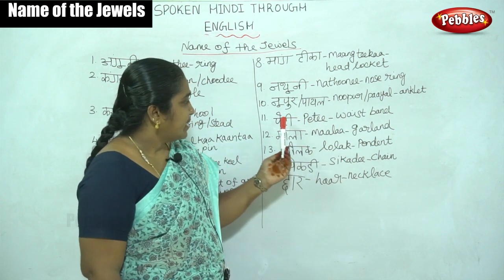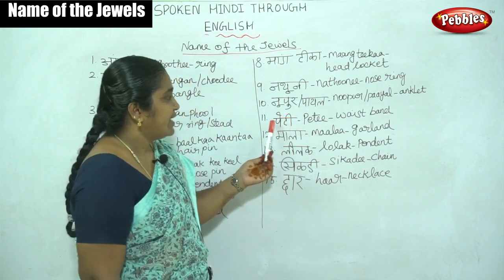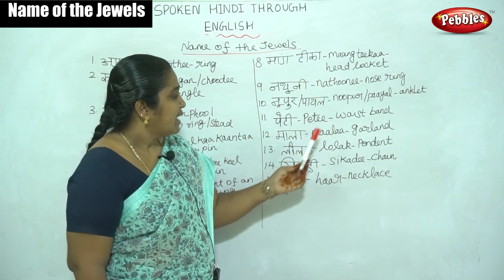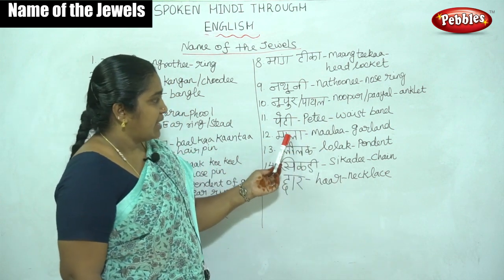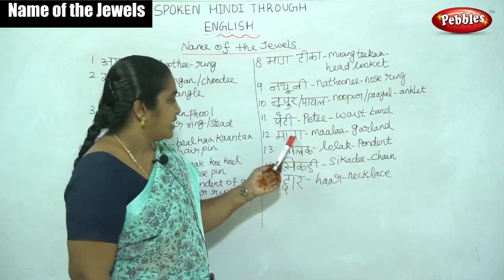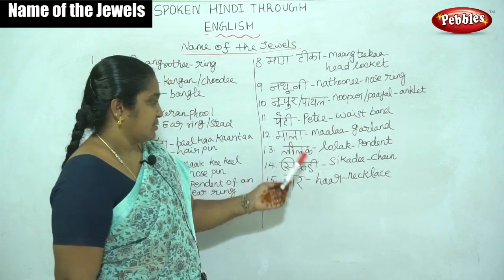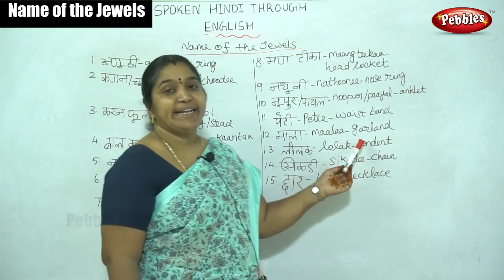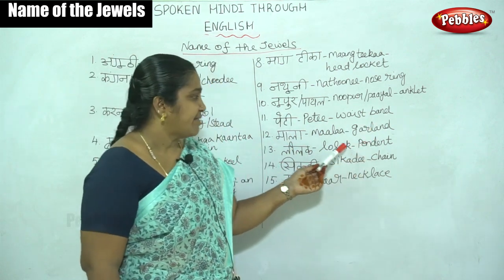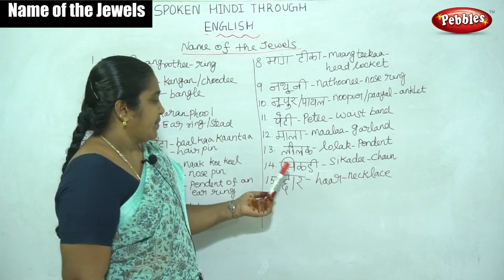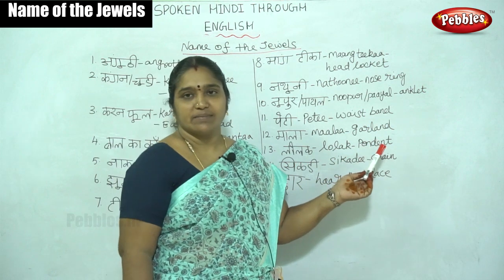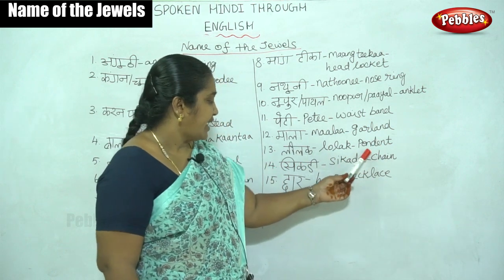Anklet. Then Peti. Peti is waistband. Then Mala. Mala is garland. Then Lolak. Lolak is pendant, which you can wear in the ear. Then Sikadi. Sikadi is chain.